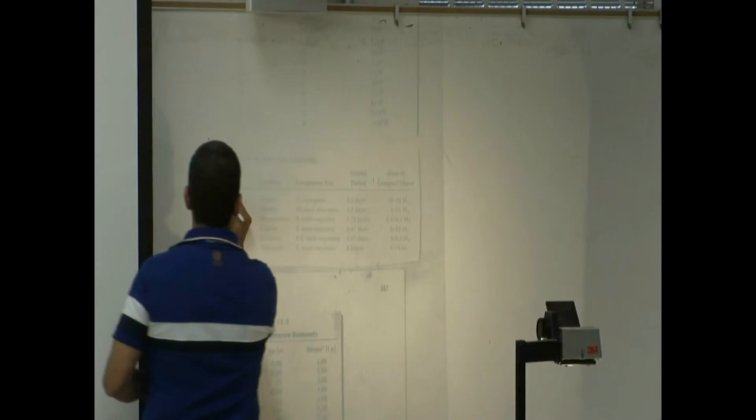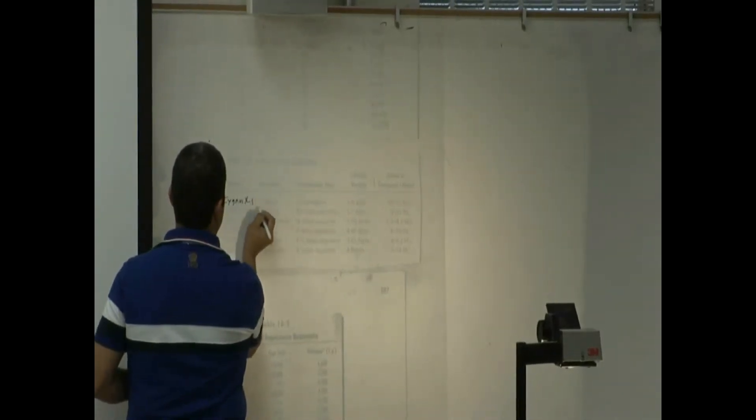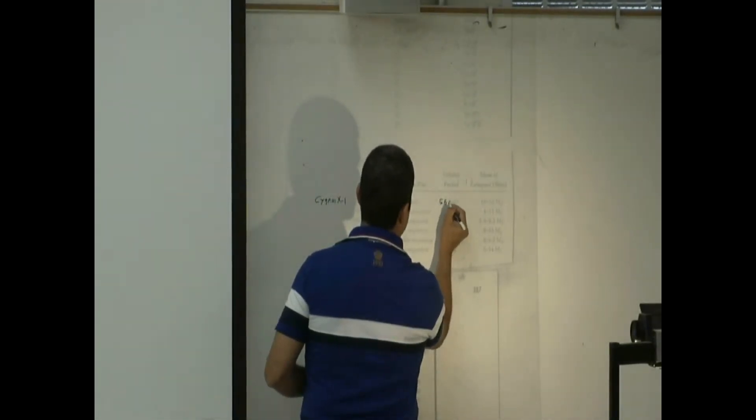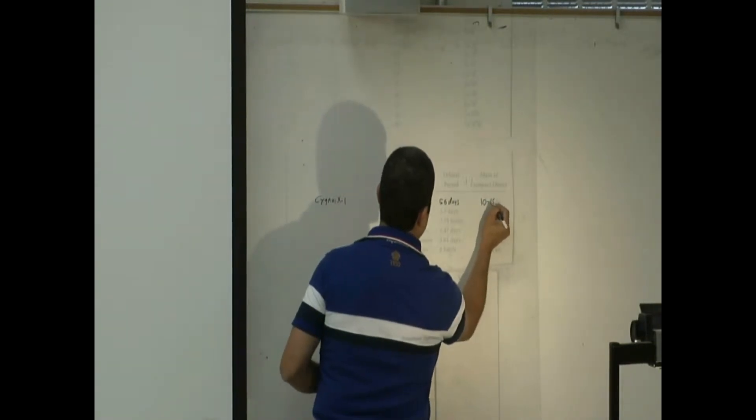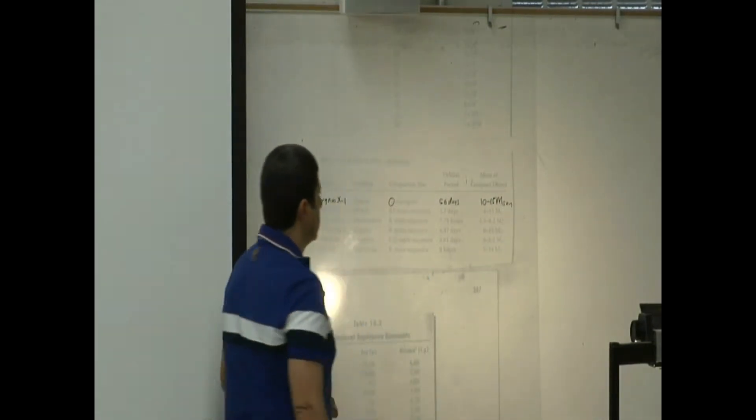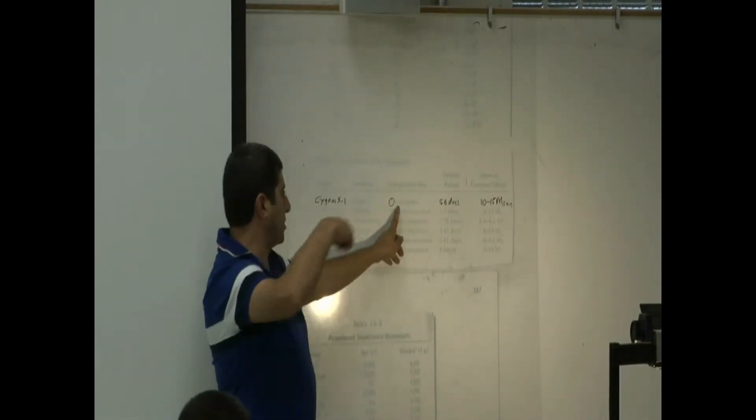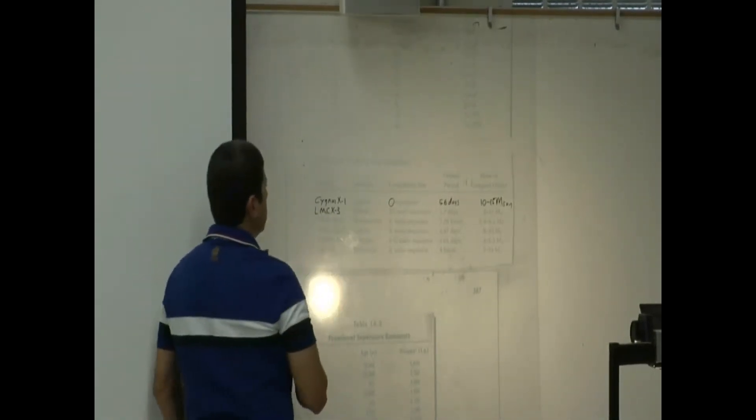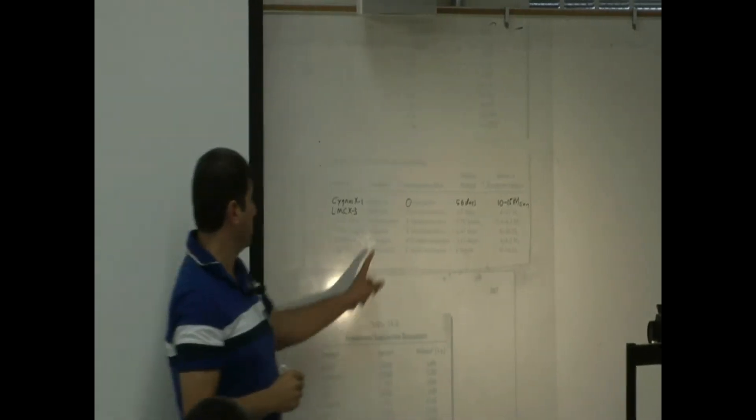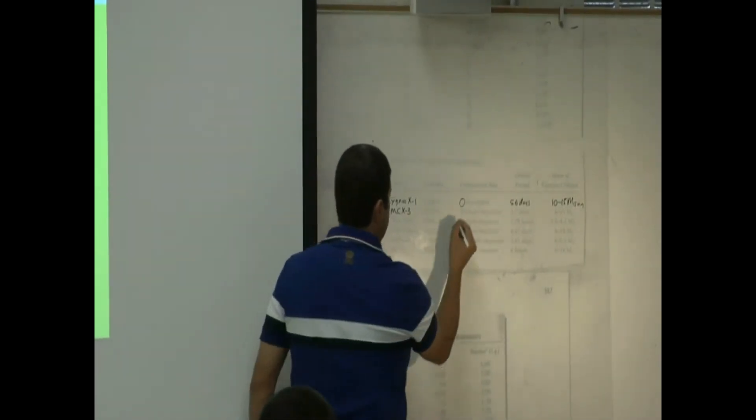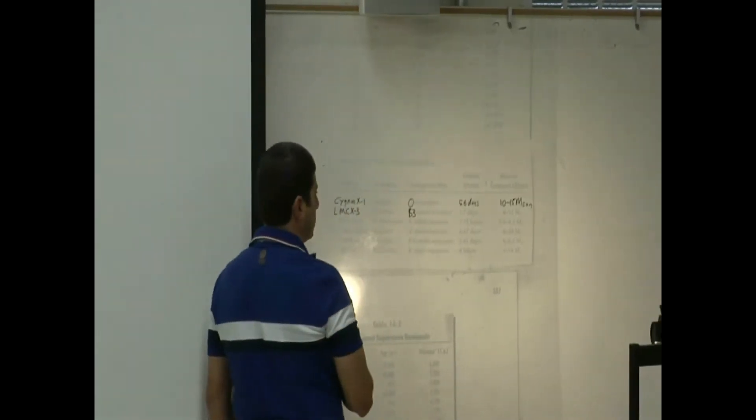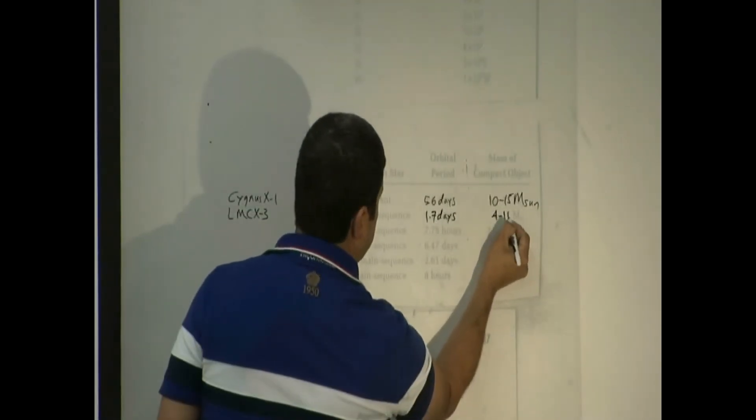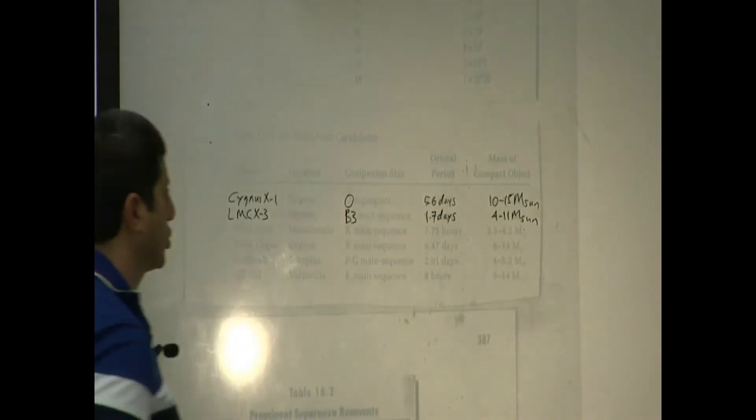You see here Cygnus X1, location Cygnus, the companion star O, 5.6 days, 10 to 15 solar masses. So that means the old giant is going around every 5.6 days. Next one, LMCX3. That's another black hole candidate. It's in the location Dorado. The companion star is B3, main sequence star. It's going around every 1.7 days. The black hole must have a mass, 4 to 11 solar masses.